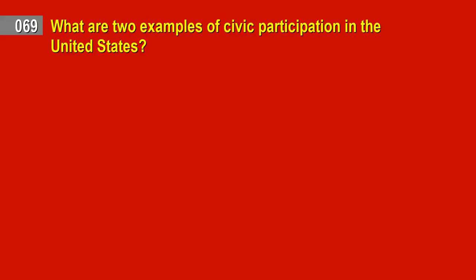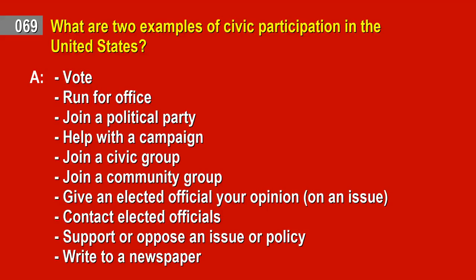Question 69. What are two examples of civic participation in the United States? Answer: Vote. Run for office. Join a political party. Help with a campaign. Join a civic group. Join a community group. Give an elected official your opinion on an issue. Contact elected officials. Support or oppose an issue or policy. Write to a newspaper.